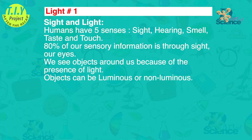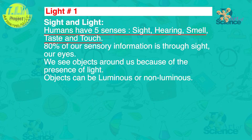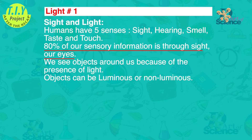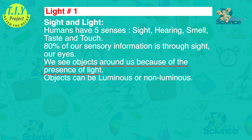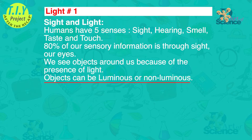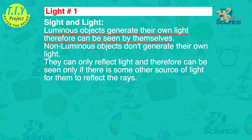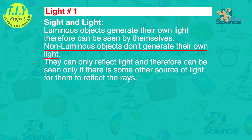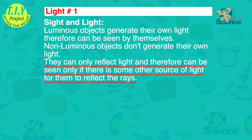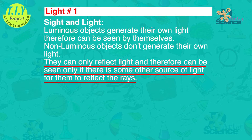Now let's do a recap. Sight and light: humans have five senses — sight, hearing, smell, taste, and touch. 80% of our sensory information is through sight using our eyes. We see objects around us because of the presence of light. Objects can be luminous or non-luminous. Luminous objects generate their own light and therefore can be seen by themselves. Non-luminous objects don't generate their own light; they can only reflect light and therefore be seen only if there is some other source of light.